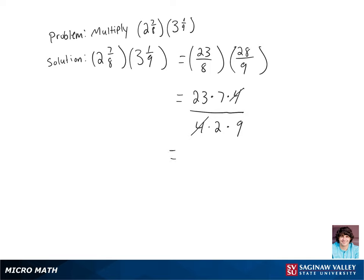We're left with 23 times 7 on the numerator, which is going to give us 161, and 2 times 9 on the denominator, which is going to give us 18.